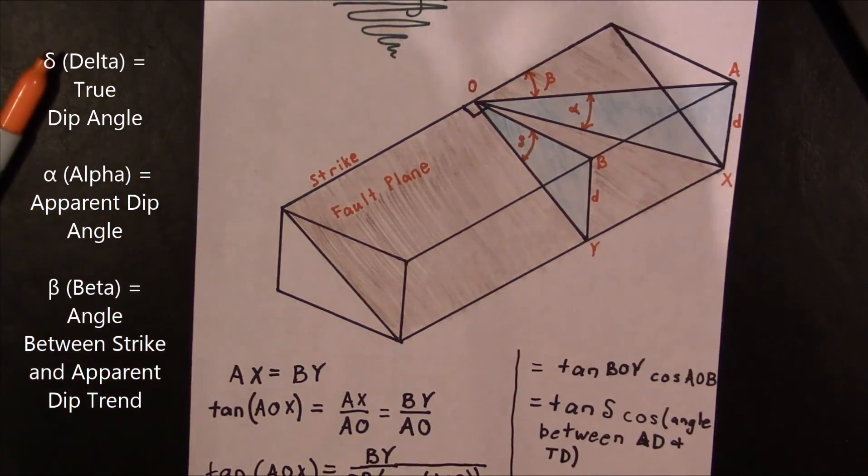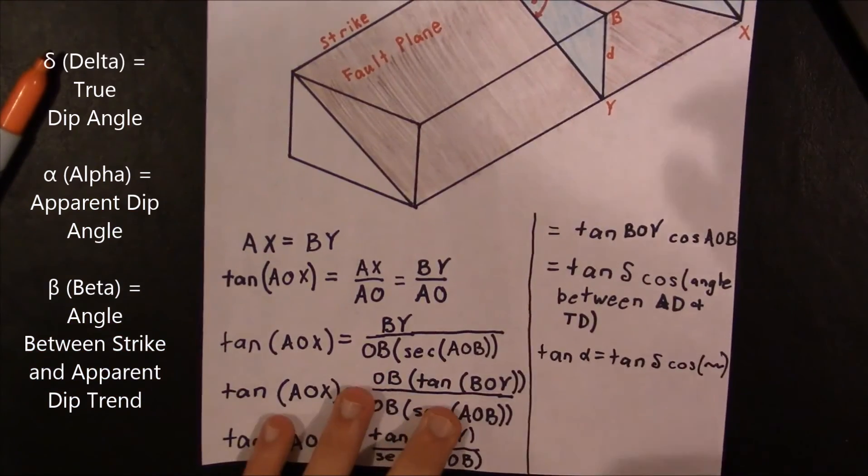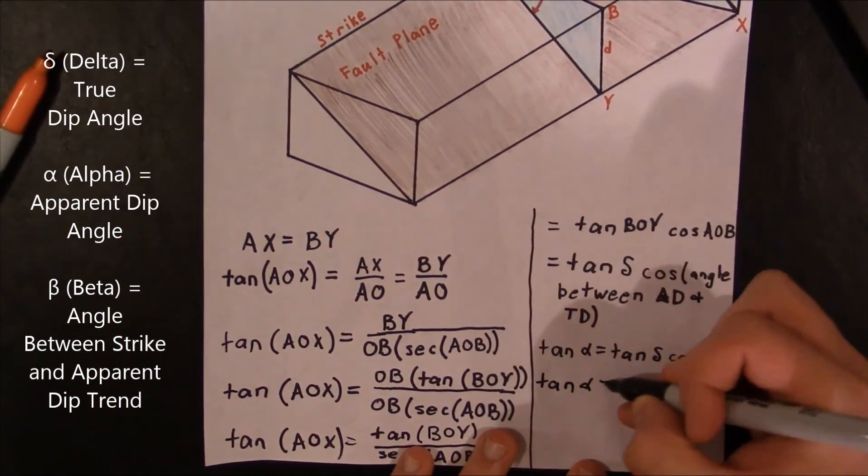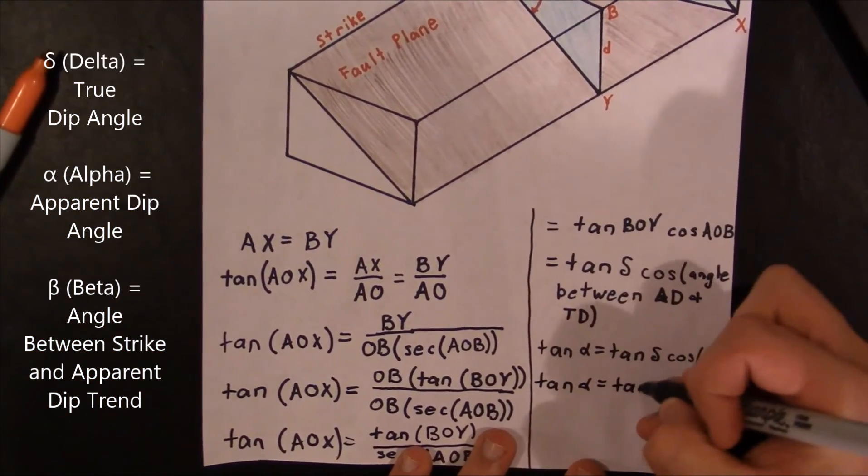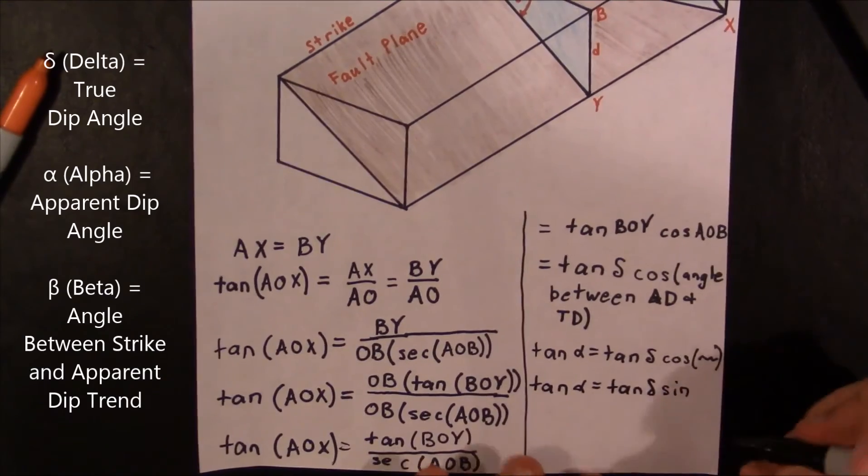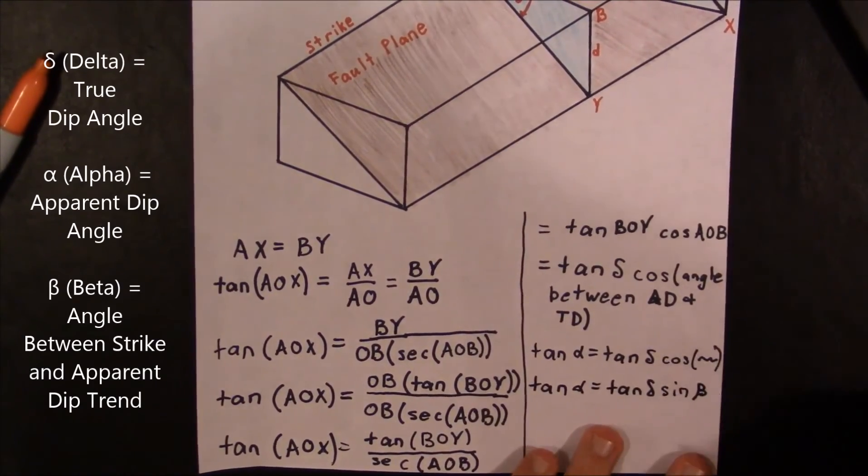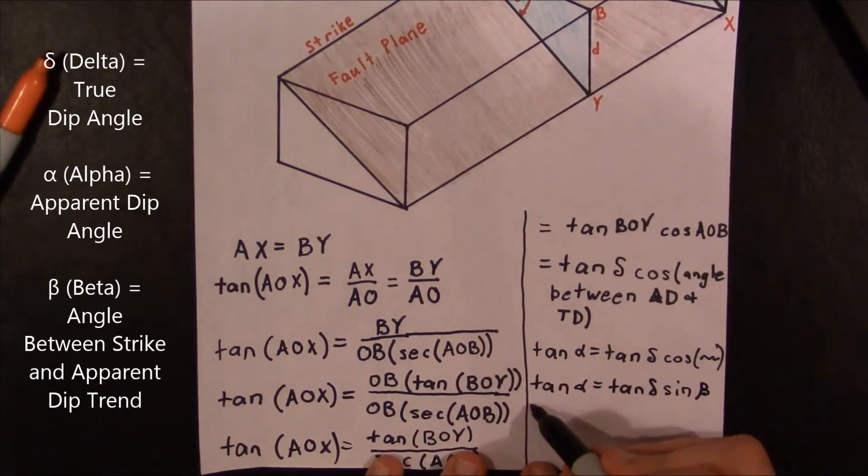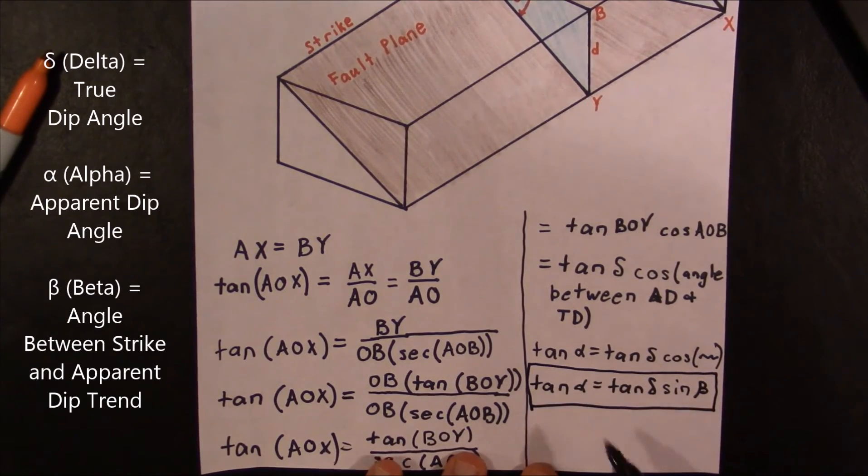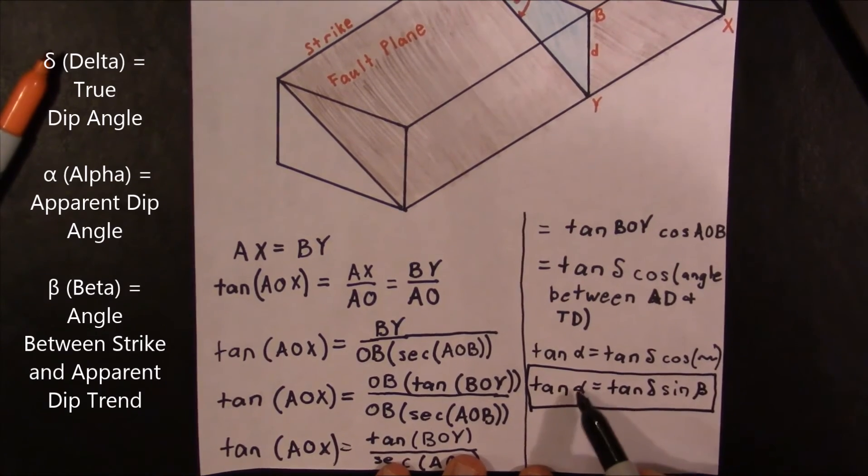So if we write that out, we're going to get that the tangent of alpha equals the tangent of delta times the sine of beta. And then this is our formula.